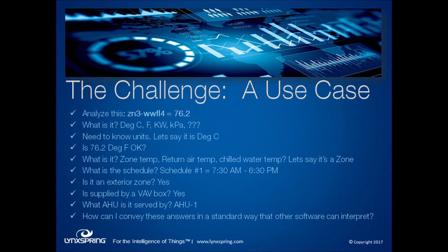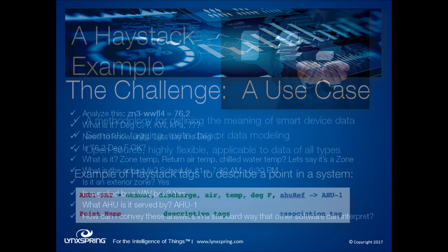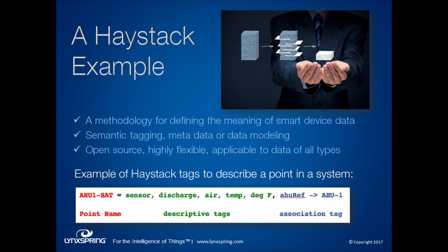Let's say it's a zone temperature. I need to know more before I can comment on whether that value is okay — what's the schedule? 76.2 on night setback might be fine. I might also want to know if it's an exterior zone, if it's a VAV type system, what air handler serves it — because if it's warm there, the problem might be with the air handler. So what we want to address is: how do we convey answers in a standardized way that's both human readable and machine readable? A simple Haystack example uses semantic tagging — people also call it metadata or data model — to describe the meaning of data.